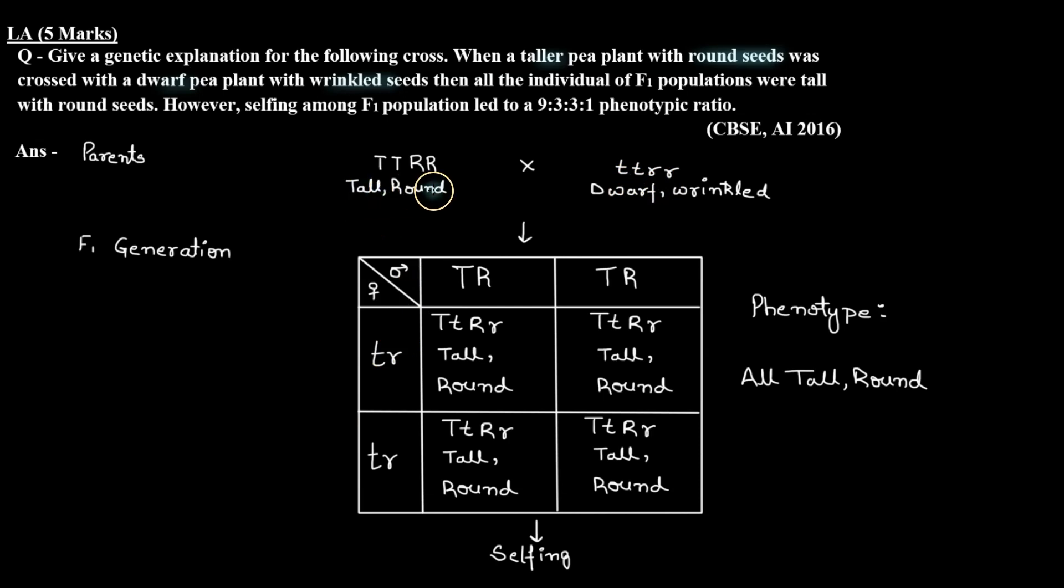Now because we have crossed a dominant phenotype with a recessive parent, this is a type of test cross. Also, we have been given that all plants in F1 population are tall with round seeds, so we have noticed that all plants have dominant characters.